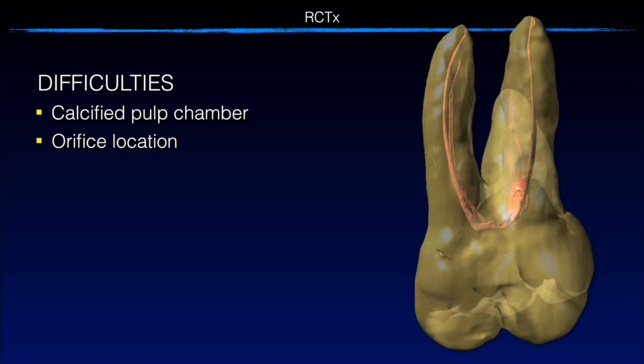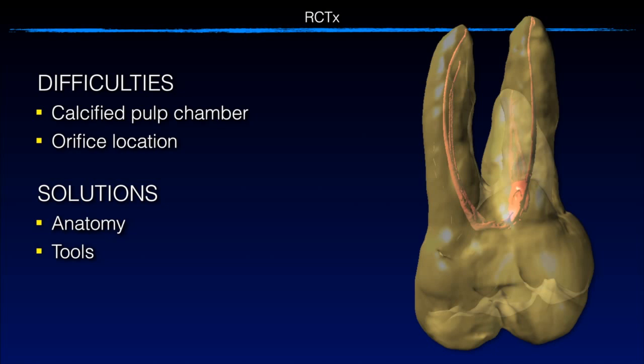In a previous video I mentioned that this is what we have left — it's hard, it's difficult. Endo is locating that orifice in teeth that have a calcified pulp chamber. This is what we find difficult, and the solution I mentioned before is reviewing anatomy and using the right tools.